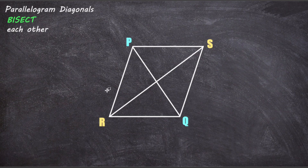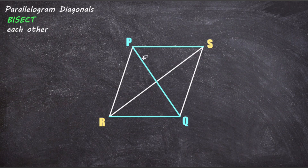Let's focus on the top and bottom parallel lines and the diagonal PQ — I'll highlight them so that they stand out. The diagonal PQ intersects the parallel lines creating a Z shape, and if you know your alternate angles you should recognize that the angles in the corners of the Z shape are alternate and therefore equivalent to each other. So let's mark those angles and label them with the value A.